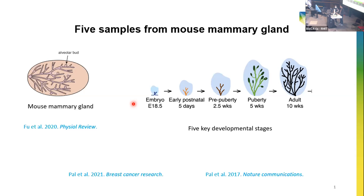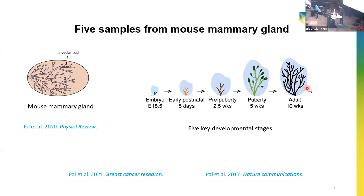To perform time course analysis from single-cell RNA sequencing data, we first need single-cell RNA sequencing samples. Here we use five samples from mouse mammary gland across five key developmental stages: the embryonic stage, early postnatal stage, pre-puberty, puberty, and adult.